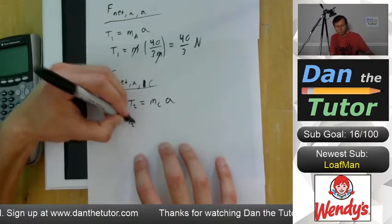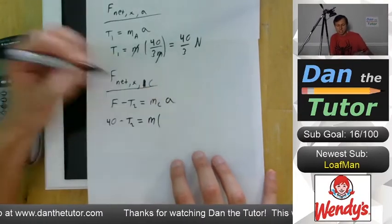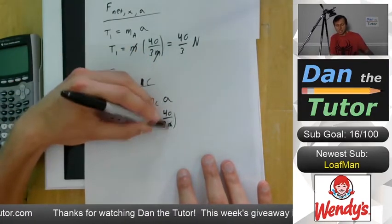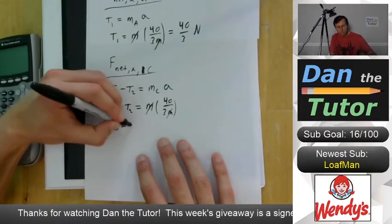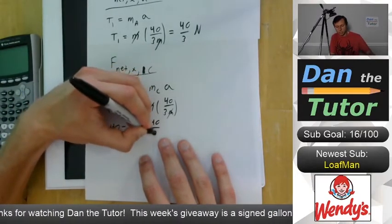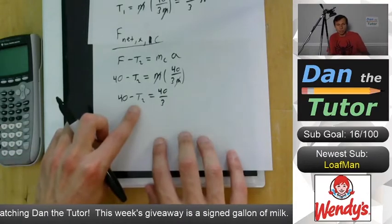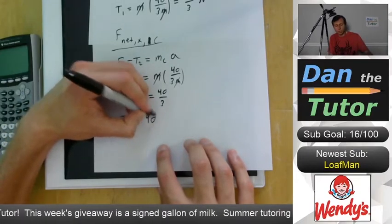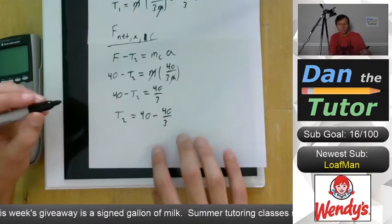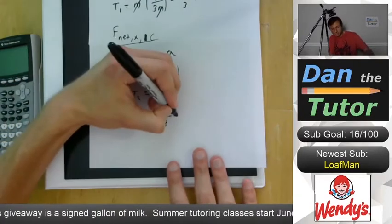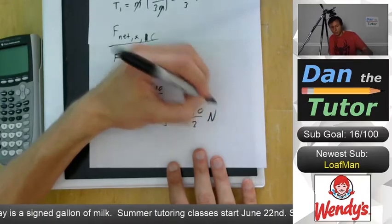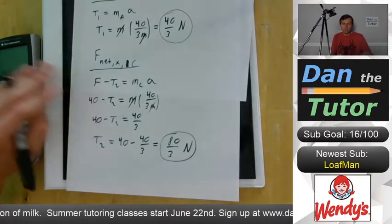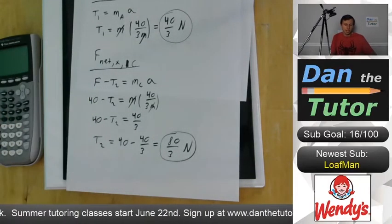Once again, mass is going to cancel here. And we get 40 minus T2 is equal to 40 thirds, which means if we just use algebra, we add T2 to both sides and subtract 40 thirds from both sides. We get T2 is equal to 40 minus 40 thirds. And that's just going to be 80 thirds, which isn't a nice number, I know, but that's going to be the tension in each of our ropes, T1 and T2. And that's how you solve that problem.